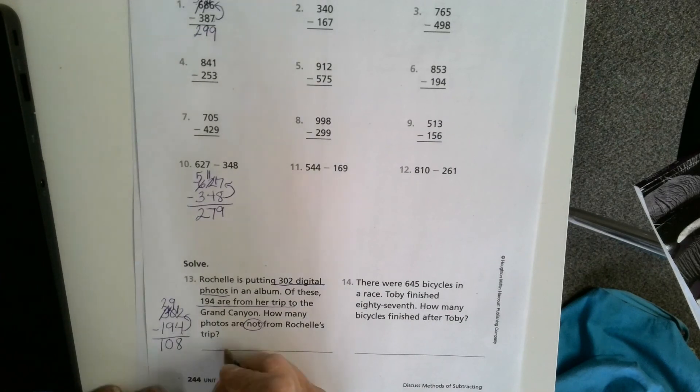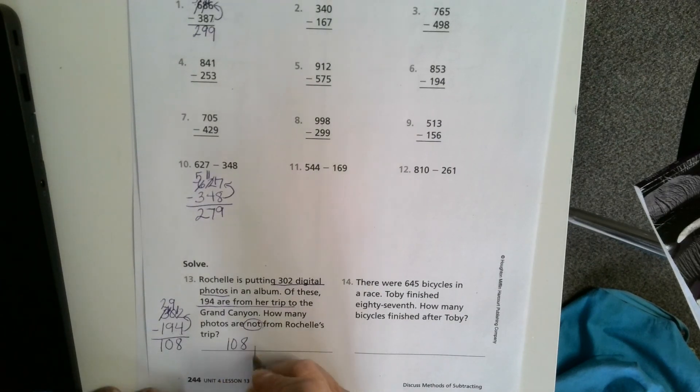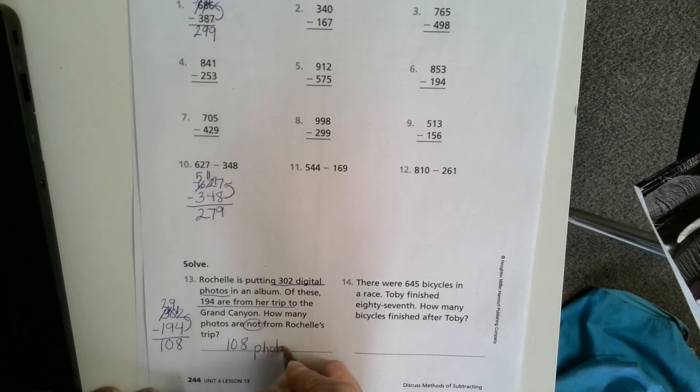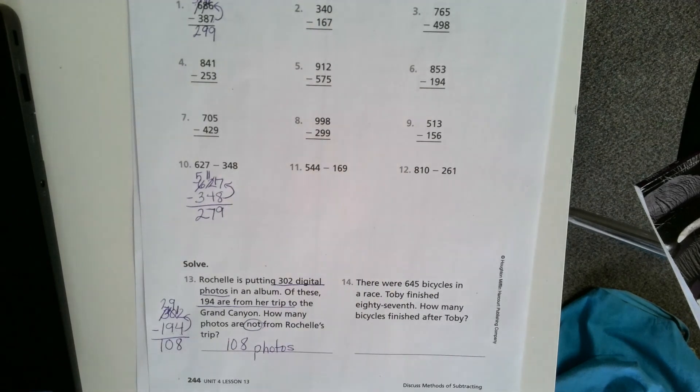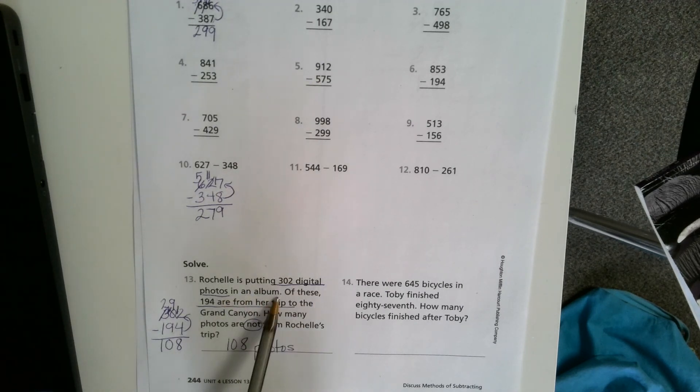So now I know 108 photos are not from Rochelle's trip. And that makes sense. Because if I put that answer back in the problem, Rochelle is putting 302 digital photos in an album. Of these, 194 are from her trip to the Grand Canyon. 108 are not from Rochelle's trip. That makes sense.